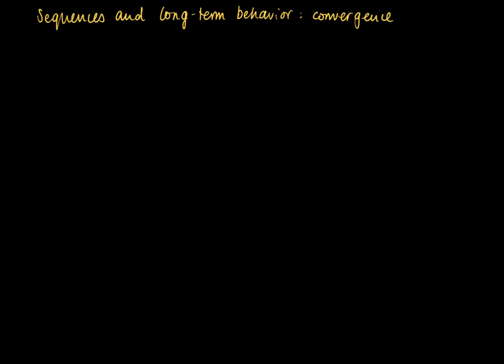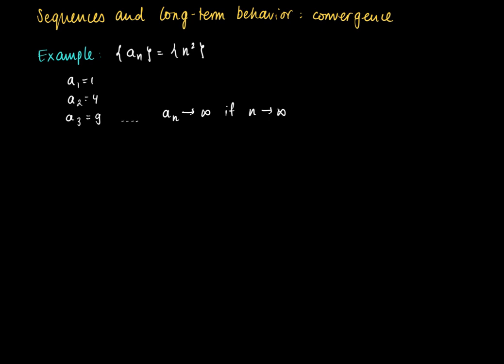In this clip I will study sequences and their long-term behavior. The topic is convergence or divergence of sequences. Consider the following example: suppose we look at the sequence with elements n squared, where n is an arbitrary natural number. So we get a_1 equals 1, a_2 equals 4, a_3 equals 9, and so forth. We clearly see that the terms n squared increase, so if we are to say something about the long-term behavior, we would say that a_n goes to infinity as n goes to infinity.